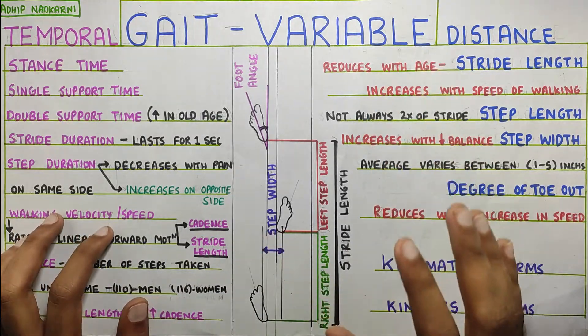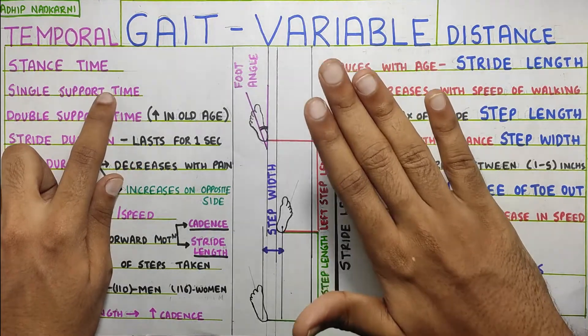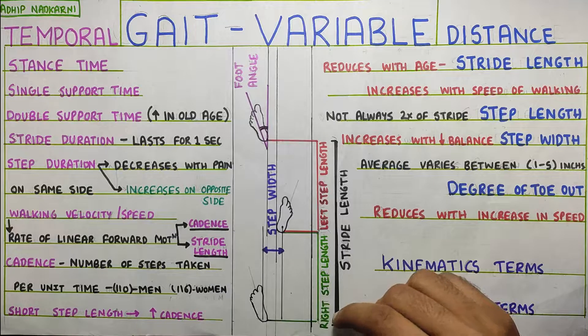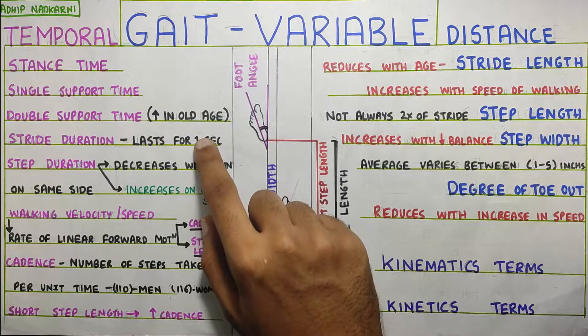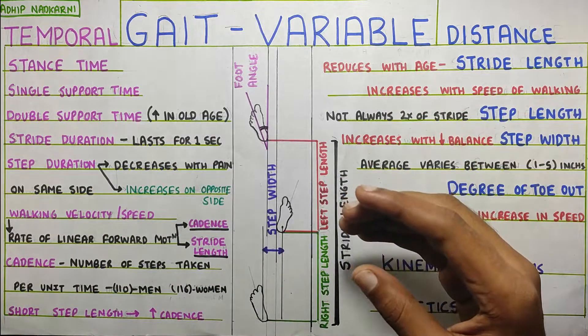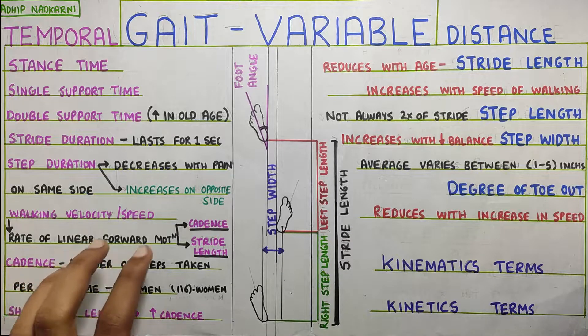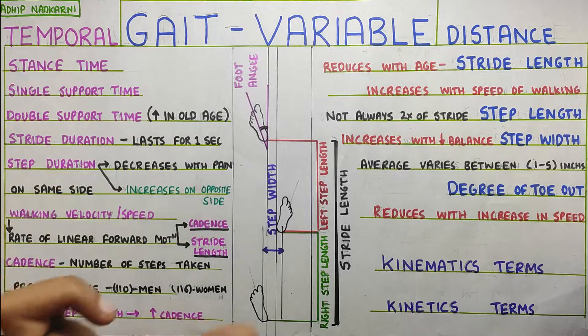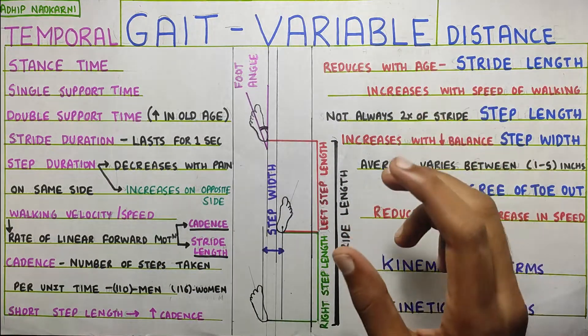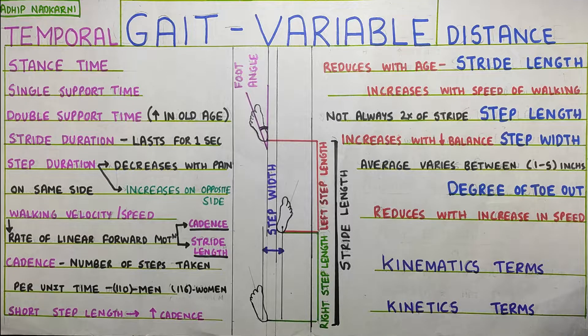So, that's all we have for today. Let's summarize this quickly. So, first in temporal, we saw the stance time. How much time you spend on the foot. Single support time. How much on the single foot. How much on the double foot is double support time. After this, we saw stride duration. How much time you take to take one stride. That is around one second for most of the people. And step duration, which does not always have to be half. Because we just saw step and stride do not have to be half of each other. Because of pain, it can alter a lot of things. Then we saw walking velocity and speed, which are dependent on cadence. Cadence is number of steps taken in a certain amount of time. And stride length will also affect your walking. The stride length gets us over here to the distance. Stride length and step length do not have that relation. After which we saw step width, which was all about the balance. And then degree of toe out. So with that, we finish off this topic.